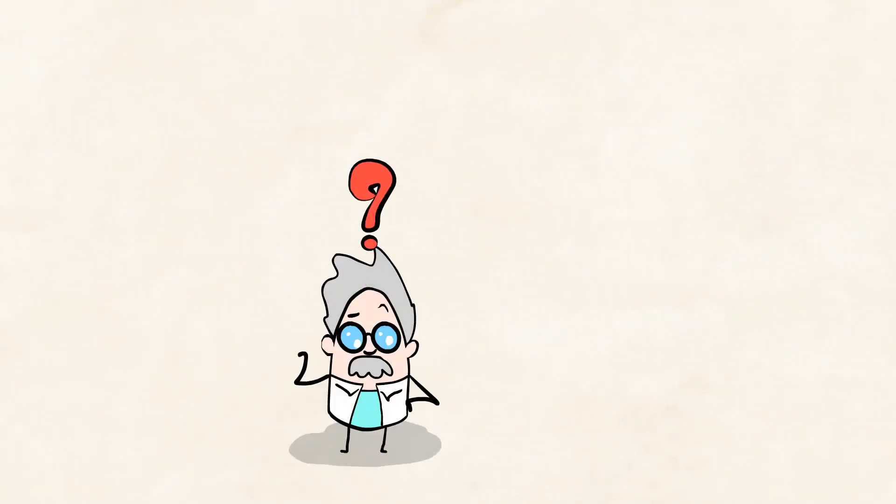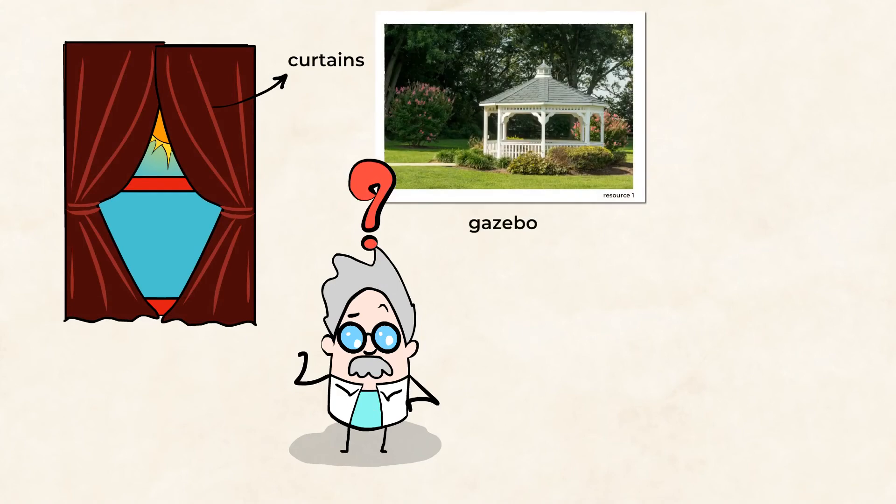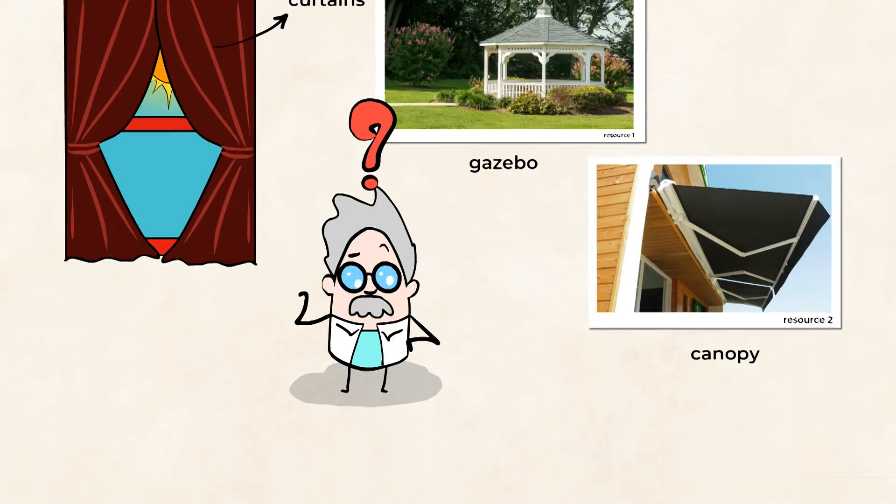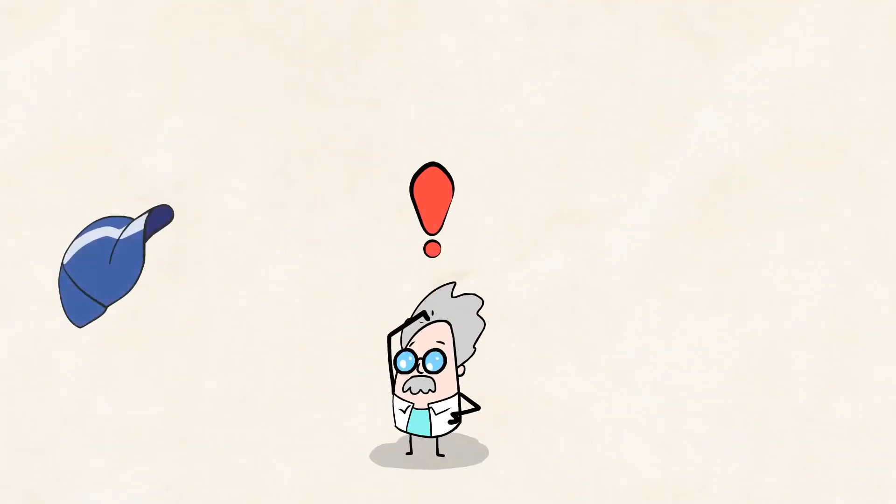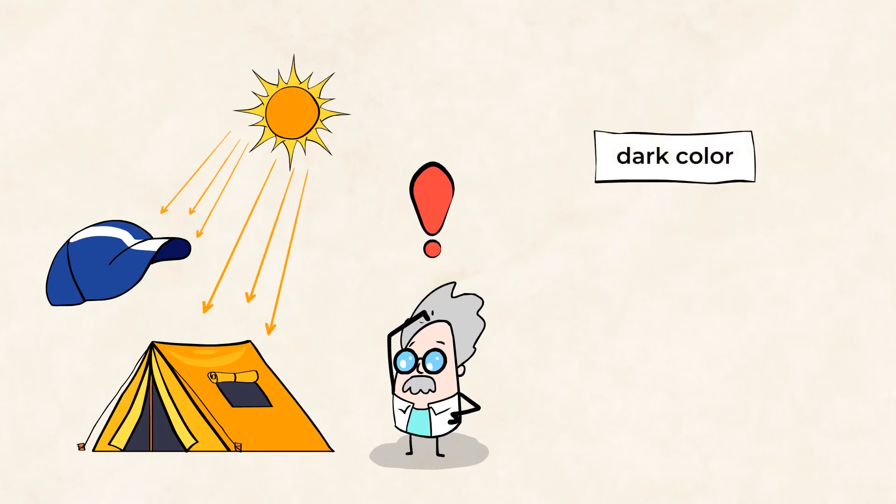What else do you think can create shade? The curtains on your windows at home, a gazebo, or a canopy, and many other things. But be careful when you choose the color of your hat or tent, because the darker it is, the more it will attract the sun and its heat.